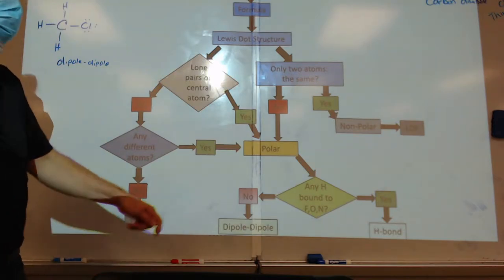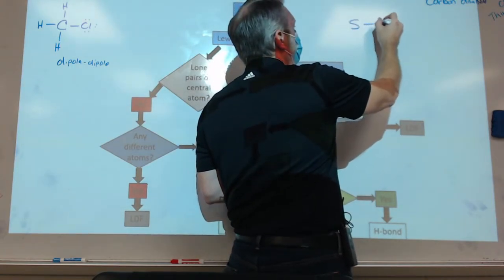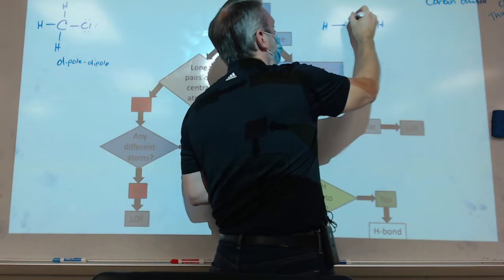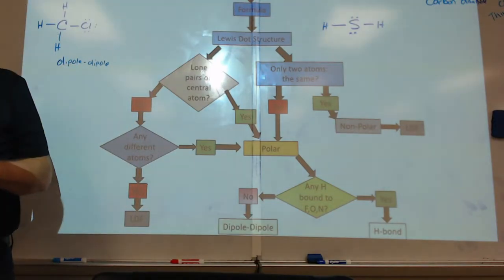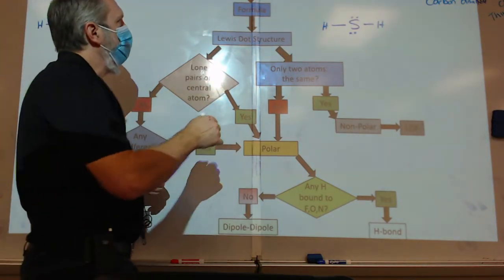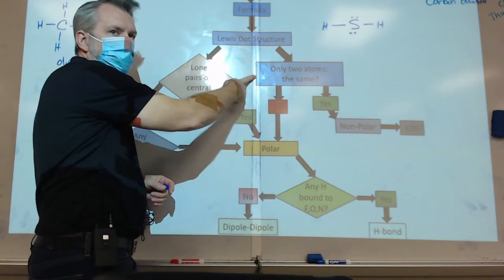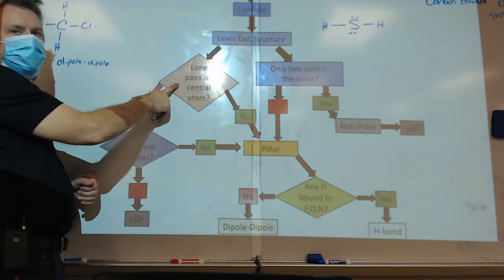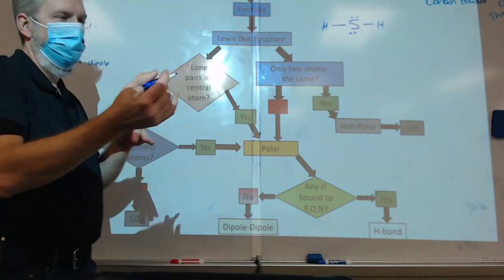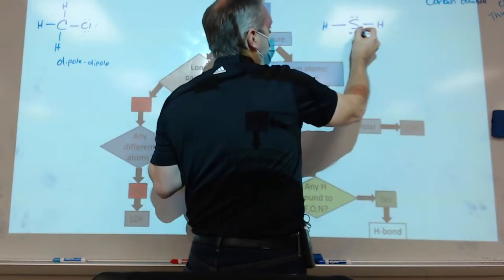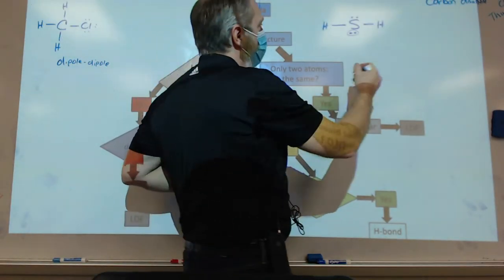Which one we do next? H2S. So who's going in the middle? S is going in the middle. Is that what everybody got for your Lewis dot structure? Alright, well let's go ahead and go down here. We got our name, we got our formula, started the formula, we got Lewis dot structure. Are there only two atoms? No. Are there lone pairs on the central atom? Yes, right. These are lone pairs. I know it's a weird thing to say lone and pair, but yeah, these are called lone pairs. So they're lone pairs on the central atom. That means this is a polar molecule. So I'm going to go ahead and write polar here.